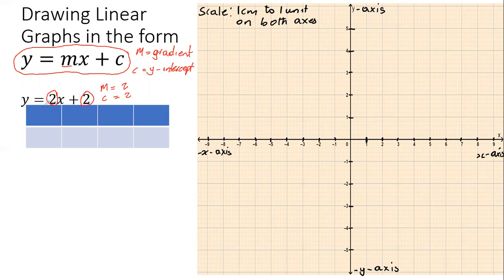In order to draw this line y = 2x + 2, all we need is at least two points, but for safety we are going to use three points — just in case we miscalculate one, we'll be able to pick up on our error. So we need a little table with x in one row and y in one row.